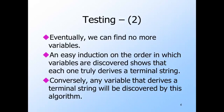It is easy to prove that whenever the algorithm says a variable derives a terminal string, it really does derive a terminal string — we're not going to prove that. The harder part is showing that the algorithm doesn't miss anything. That is, if variable A derives some terminal string, then the algorithm will eventually discover A. We'll do that on the next slide.